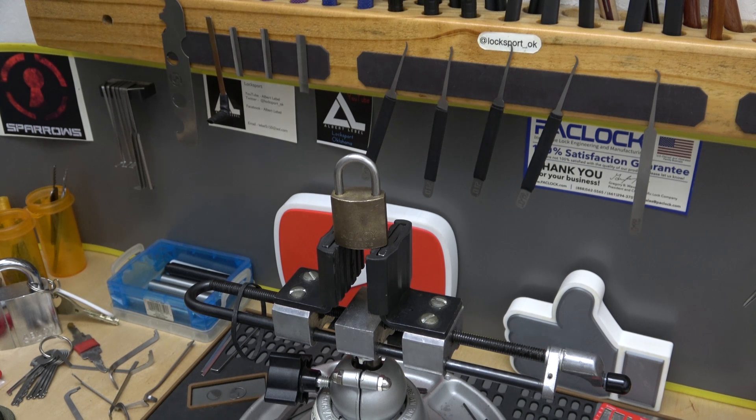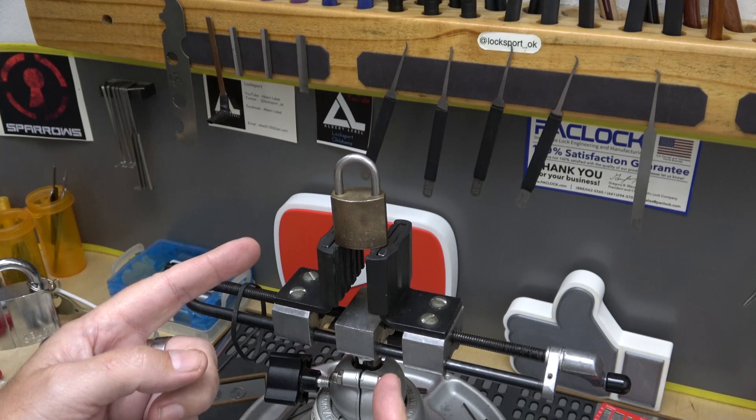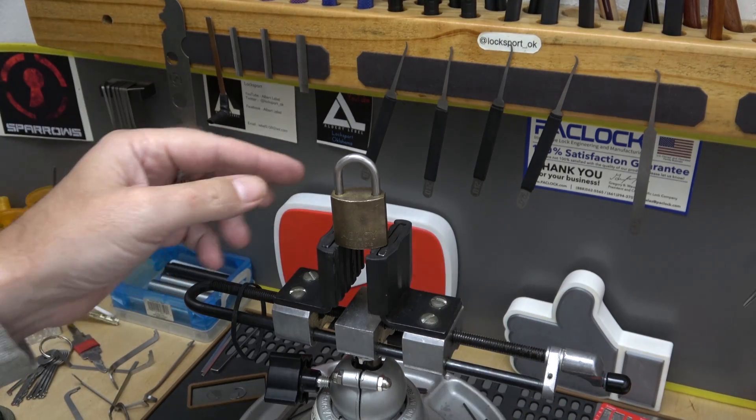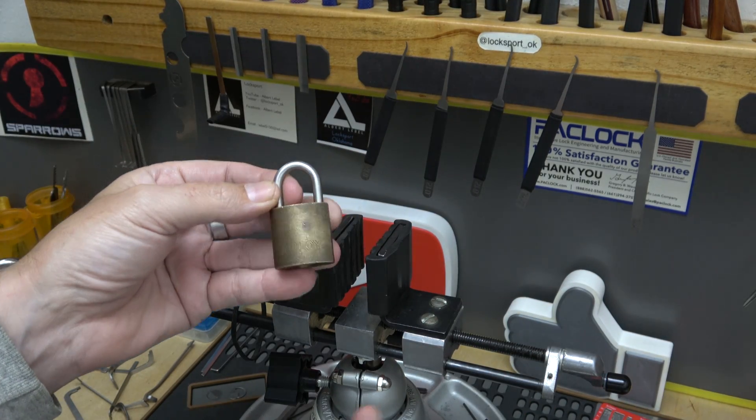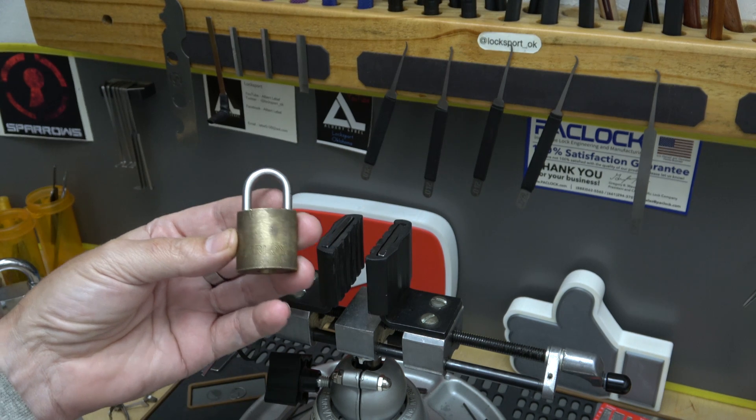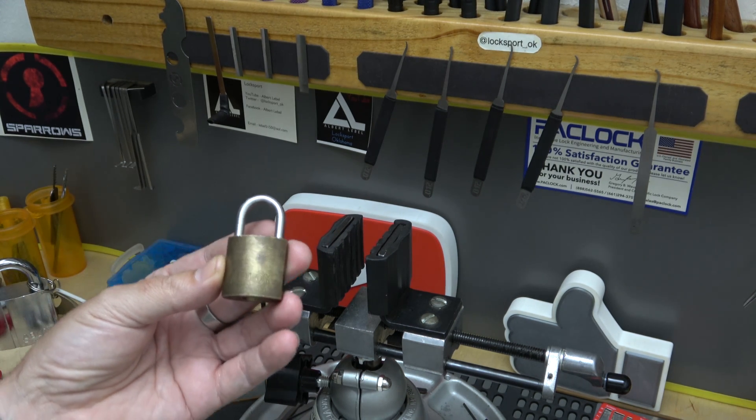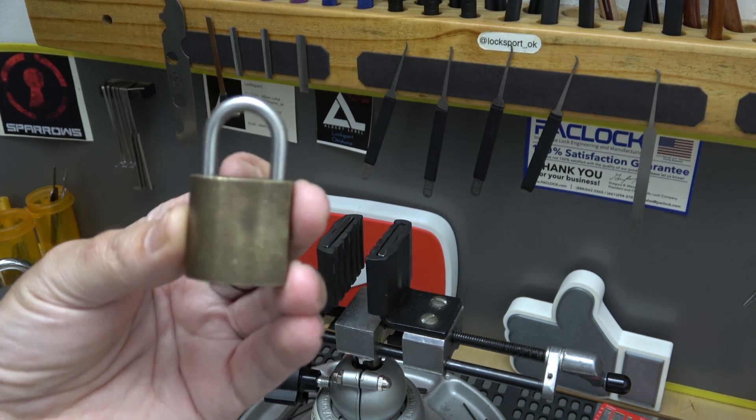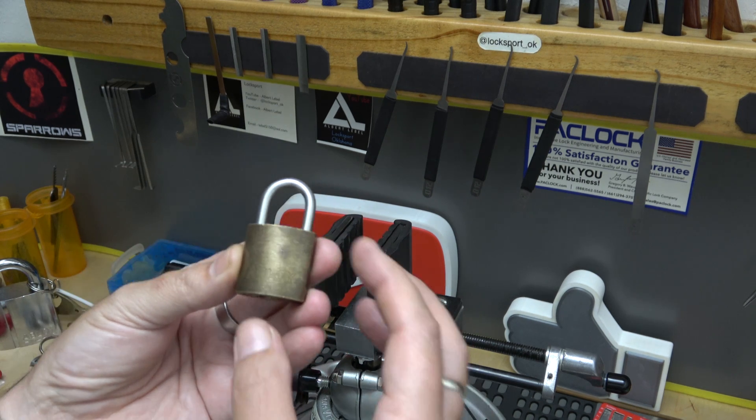All right y'all, welcome back. It's Albert Labelle. We're going to take a look at this little Abloy. I just had to have it. It was another one of those eBay finds. I'm always hunting eBay for cool things, and this just screams cool.